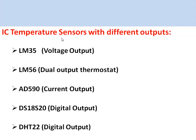Commonly used IC temperature sensors with different output types include the LM35, which gives voltage output; LM56, which gives dual logic output; AD590, which gives current output; DS18S20, which gives digital output; and DHT22, which is also a digital output sensor.